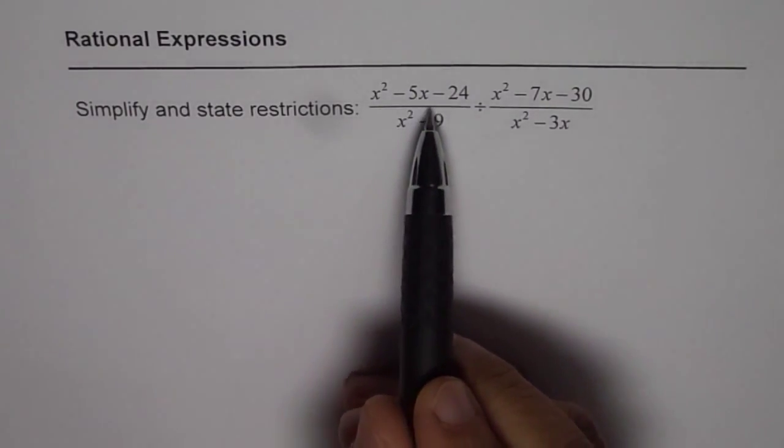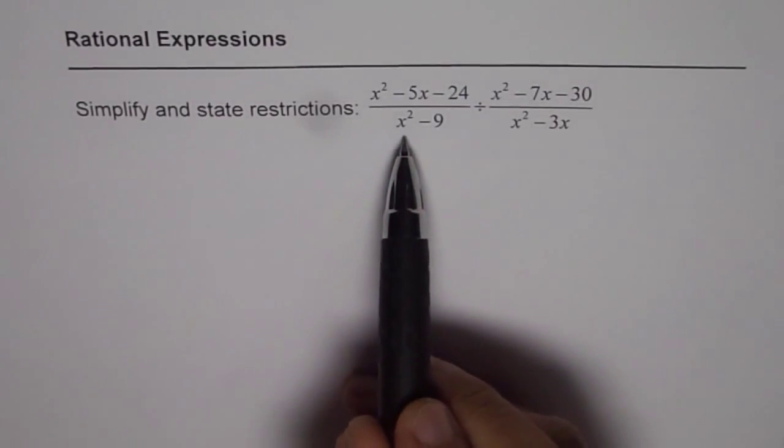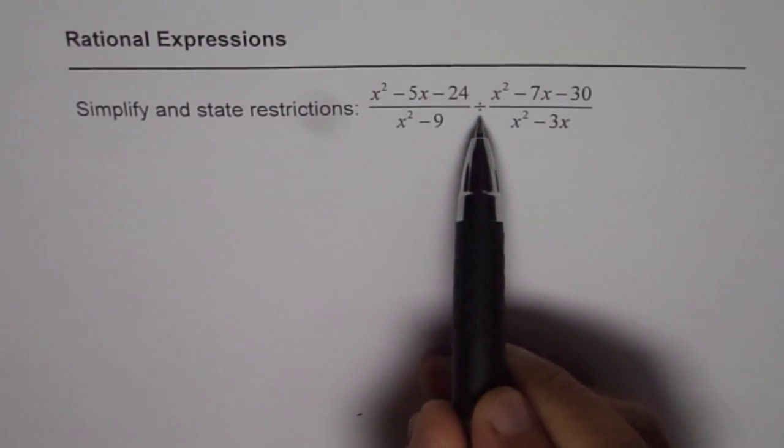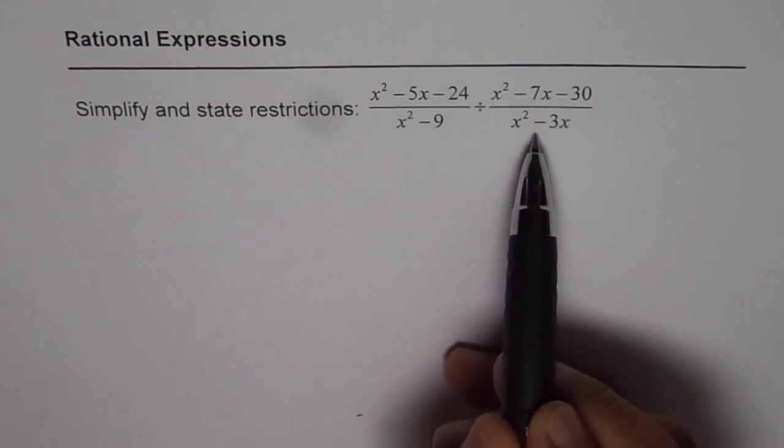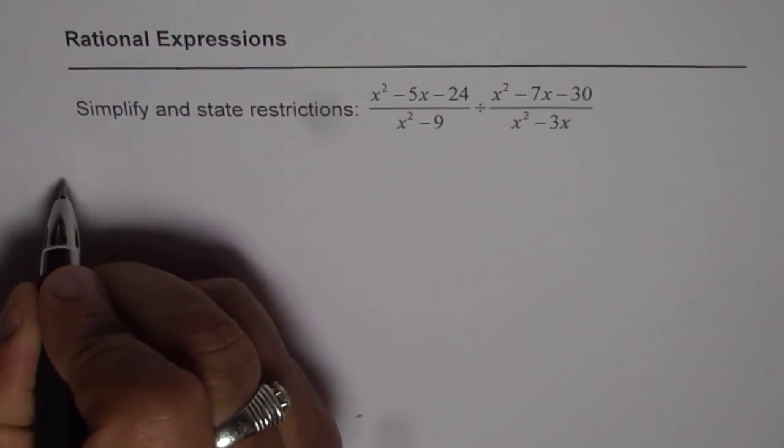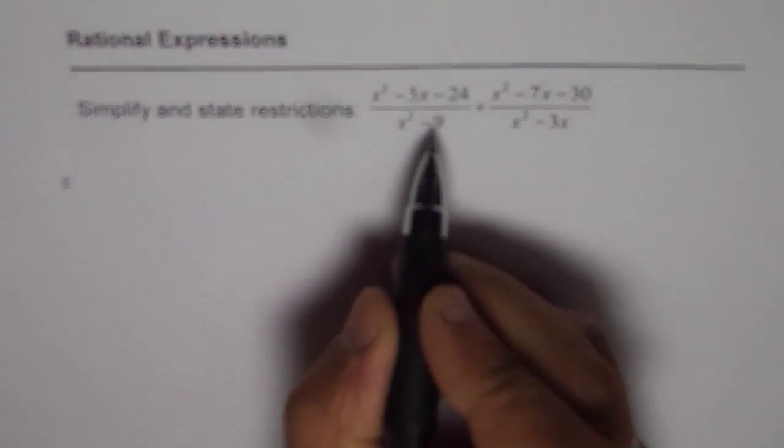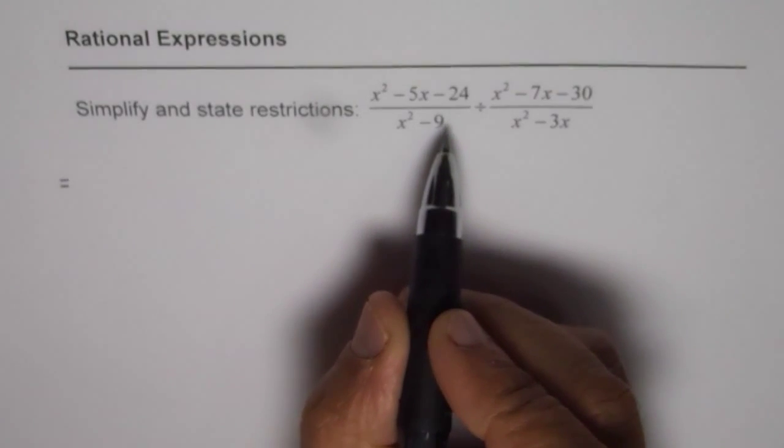We are given x squared minus 5x minus 24 divided by x squared minus 9, divided by x squared minus 7x minus 30 over x squared minus 3x. So, let's rewrite these rational expressions in factored form.